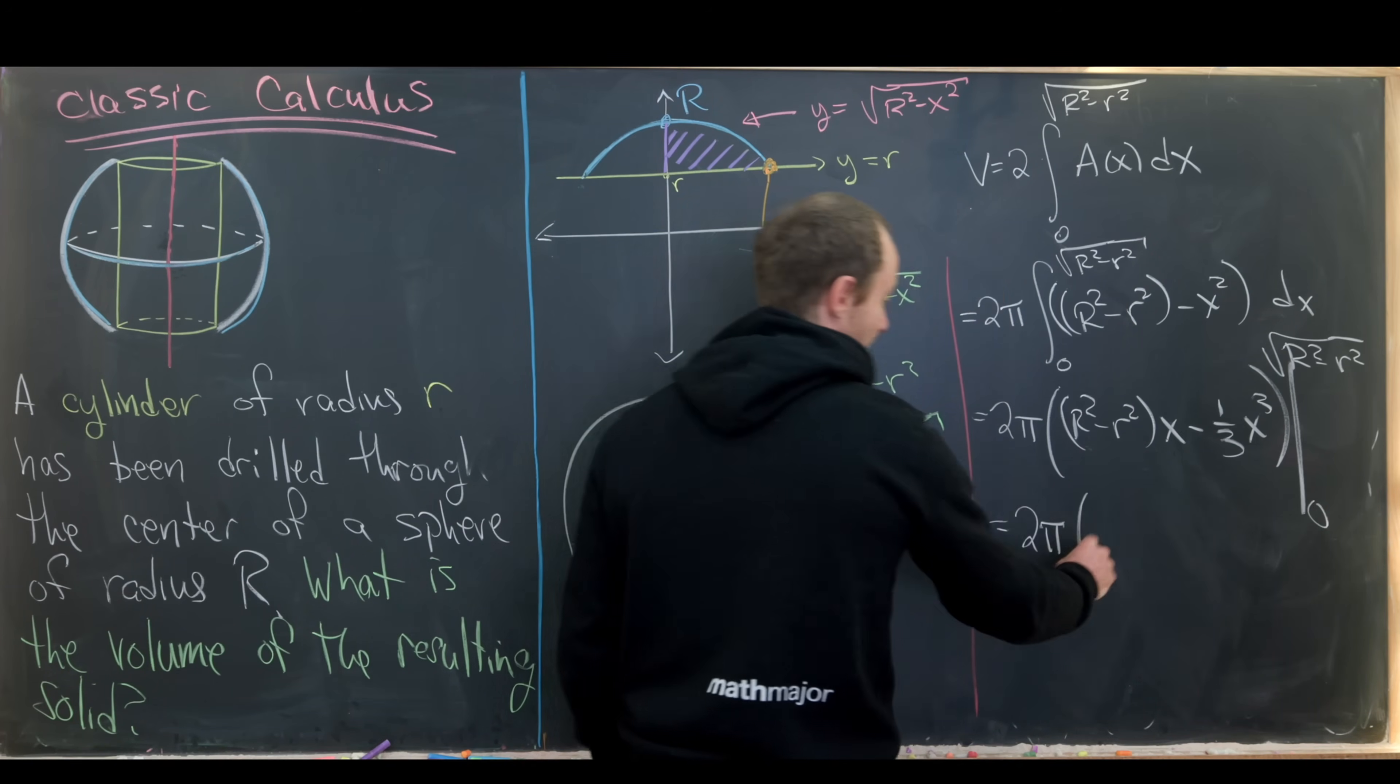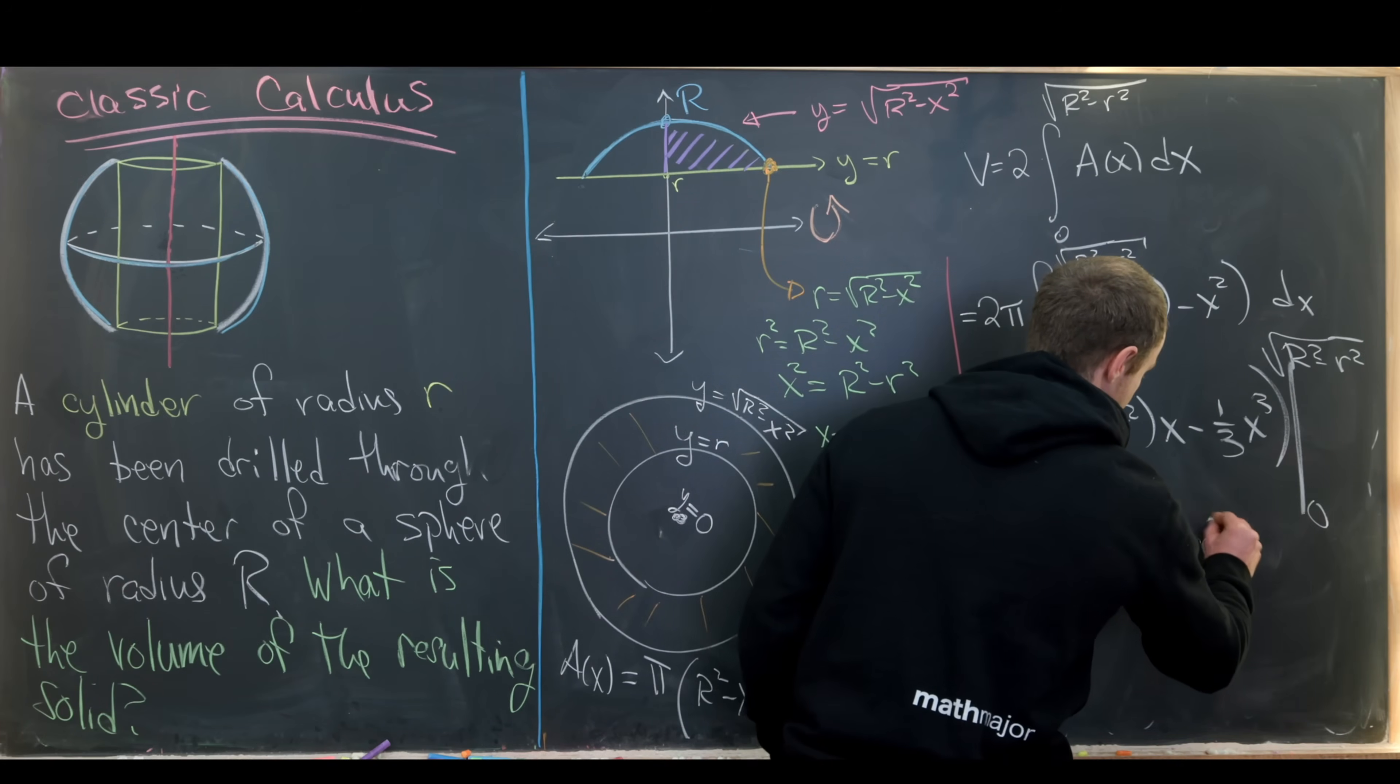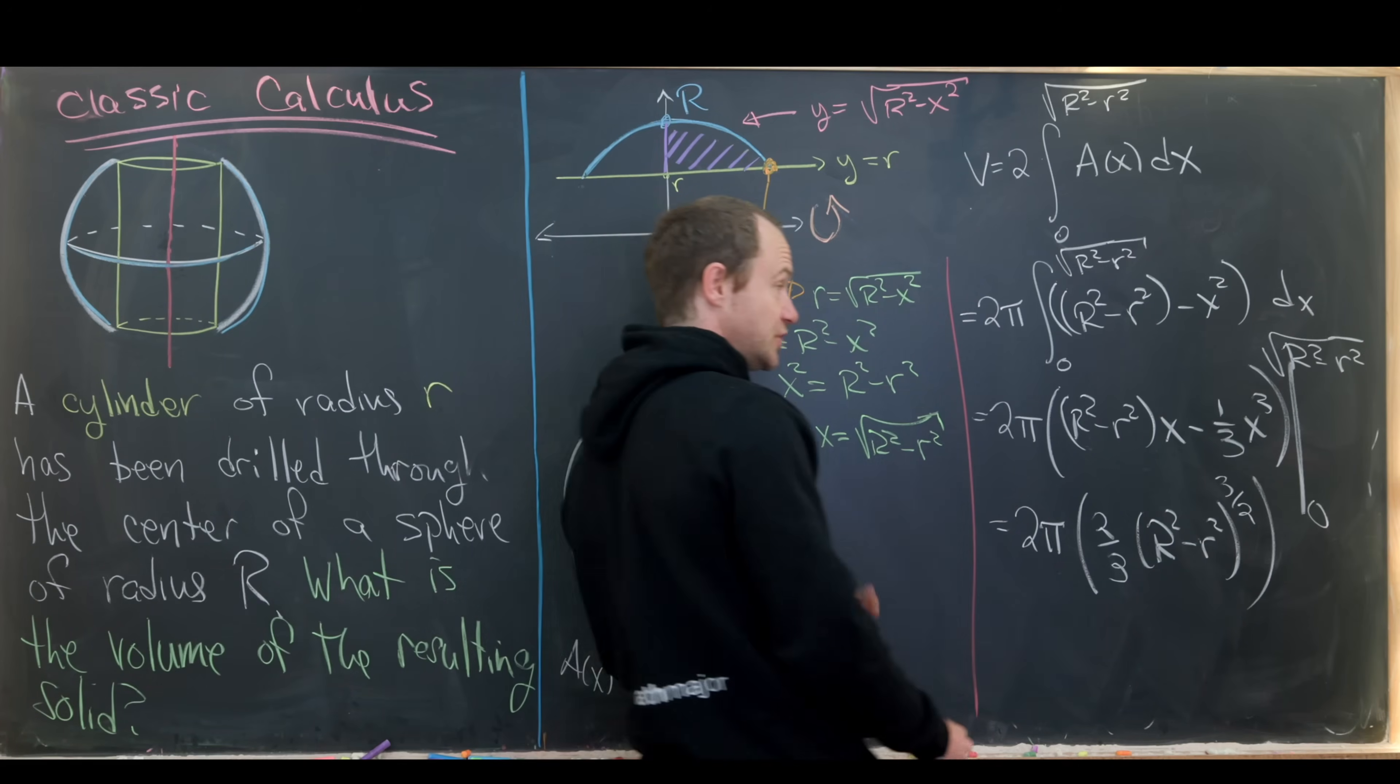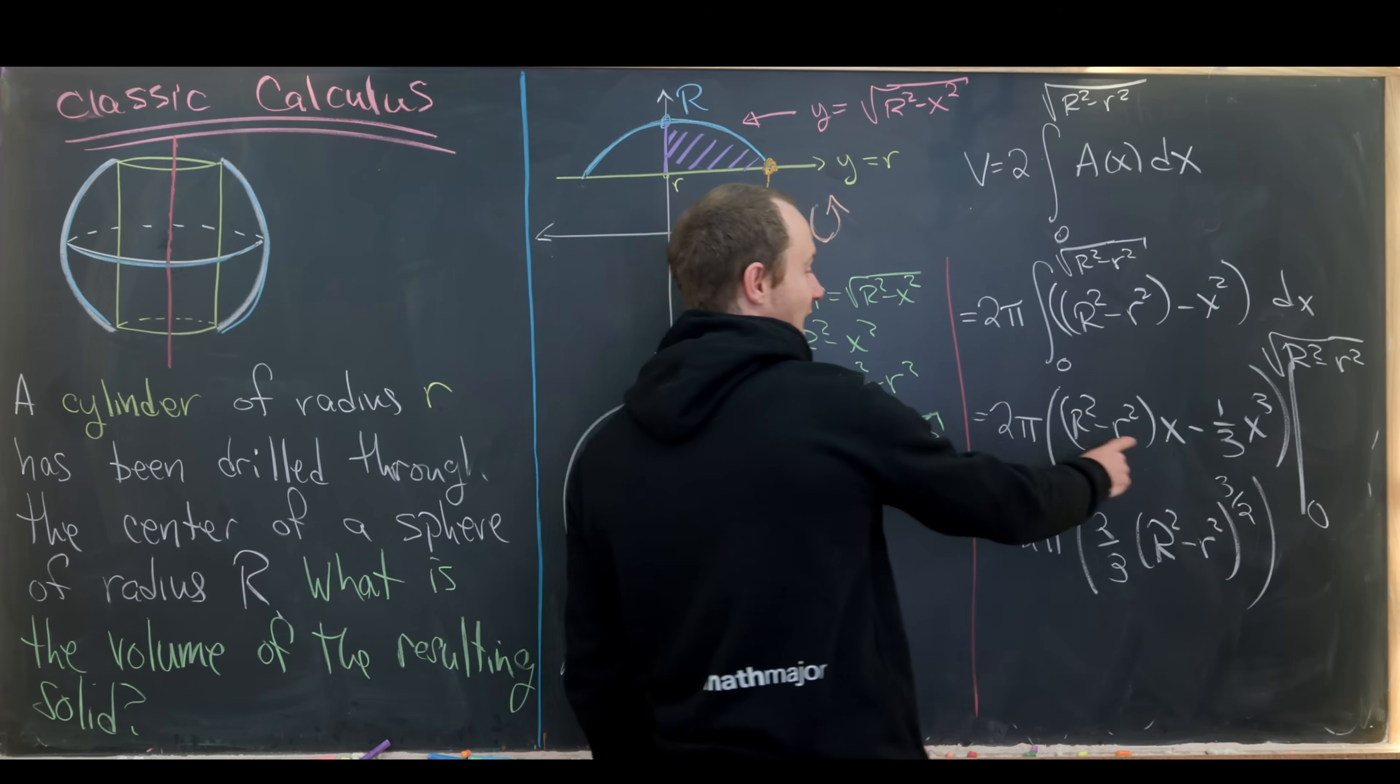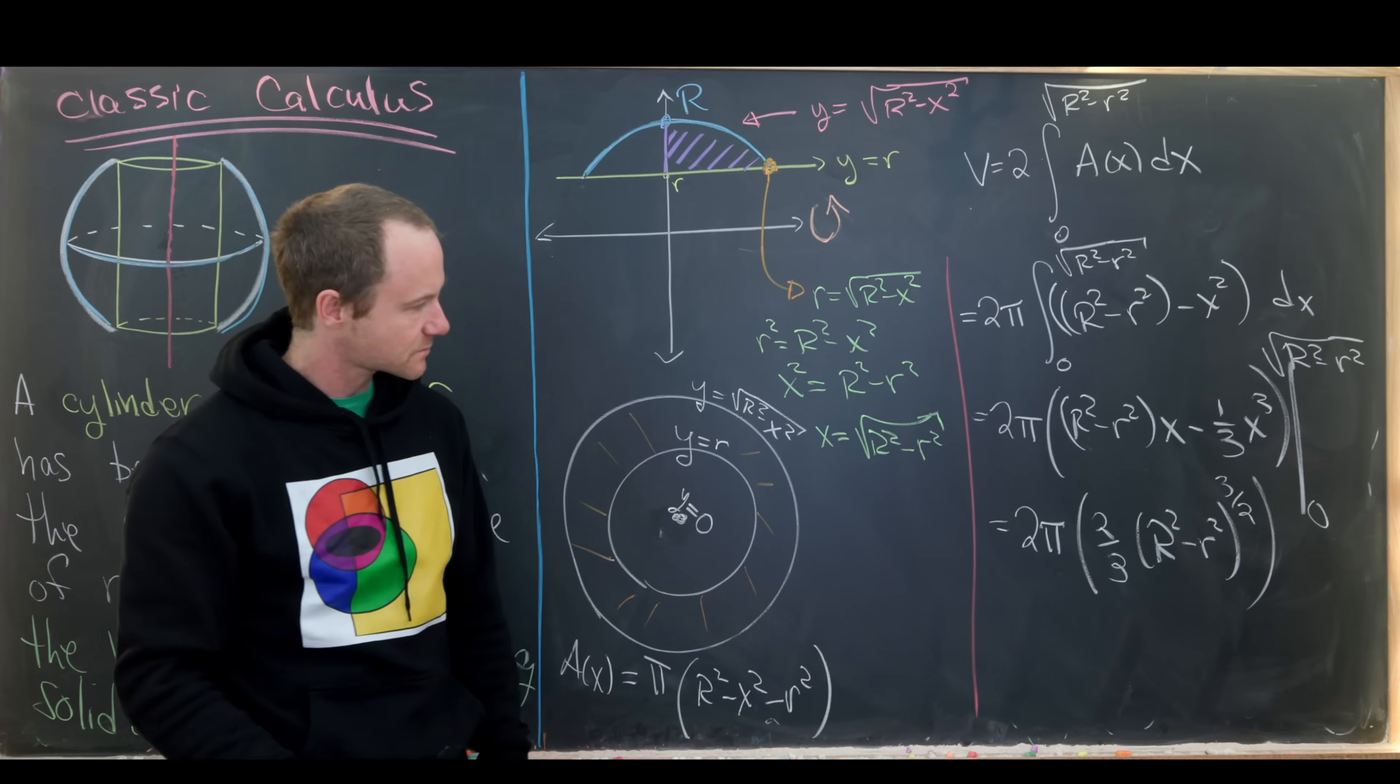So now we have two pi times two thirds and then capital R squared minus little r squared to the three halves. So again, three halves for two different reasons. Here we're cubing something to the half power and here we're multiplying something to the half power by itself.